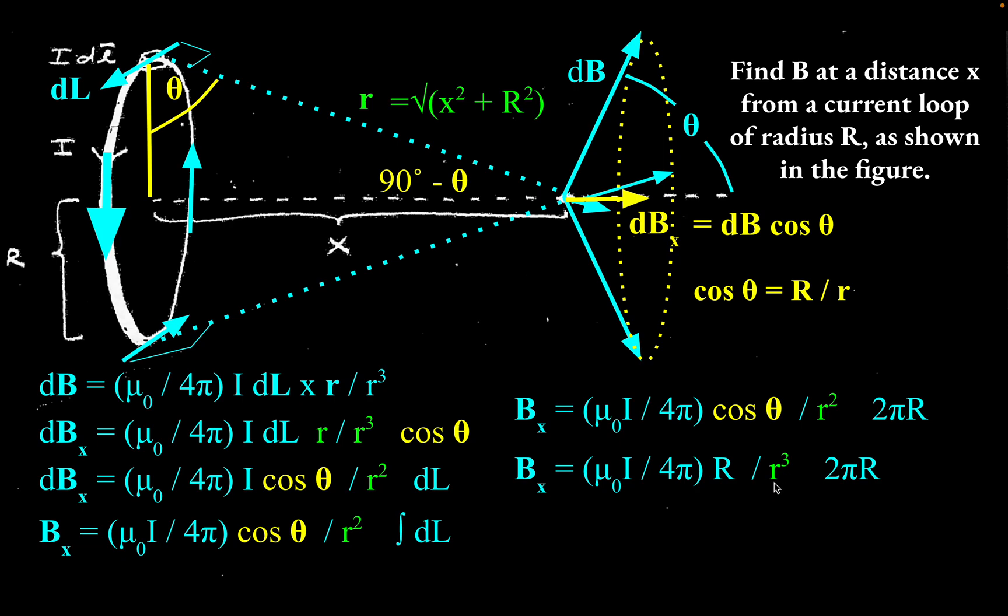Then we can simply substitute that in. So little r cubed, instead of being the square root of x squared plus big R squared, is going to be x squared plus big R squared to the three halves power. And so finally, we've done it. We've got this expression for the magnetic field at this point, as it depends on x as you move away from this current carrying loop.